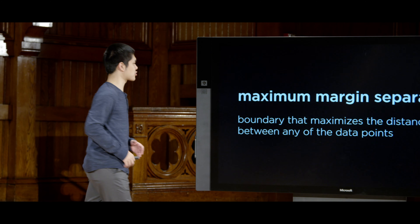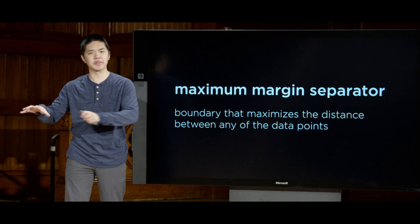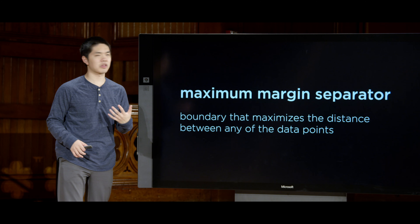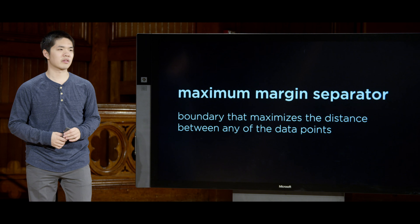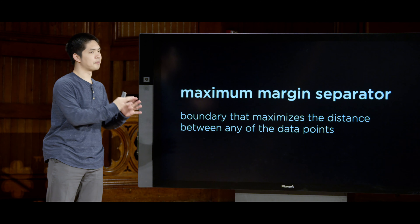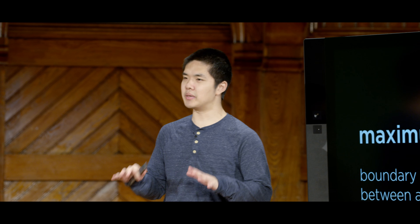That is what support vector machines are designed to do. They find what we call the maximum margin separator — a boundary that maximizes the distance between the groups of points, rather than one that's very close to one set or the other. The support vector machine finds this maximum margin separator by finding the support vectors — the vectors closest to the line — and trying to maximize the distance between the line and those particular points. This works in two dimensions and also in higher dimensions, where instead of a line we look for a hyperplane, some decision boundary that separates one set of data from the other.